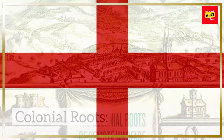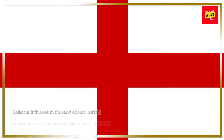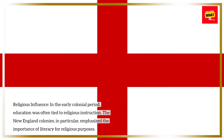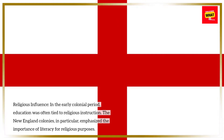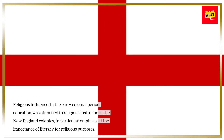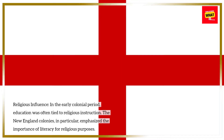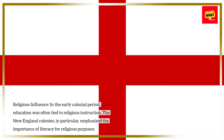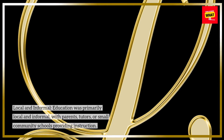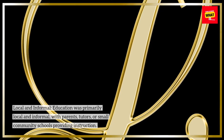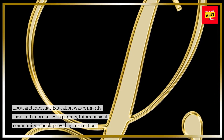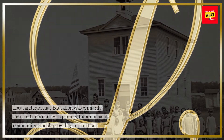Colonial roots. In the early colonial period, education was often tied to religious instruction. The New England colonies, in particular, emphasized the importance of literacy for religious purposes. Education was primarily local and informal, with parents, tutors, or small community schools providing instruction.